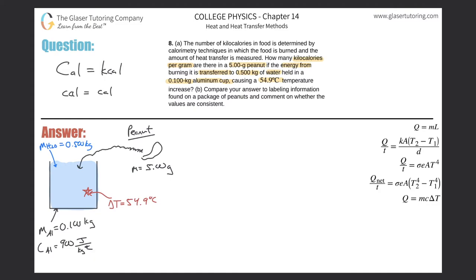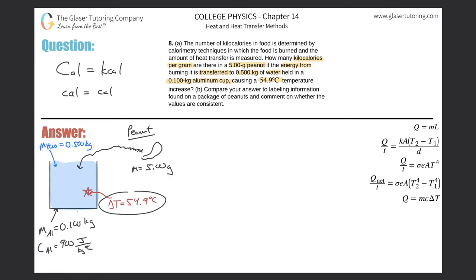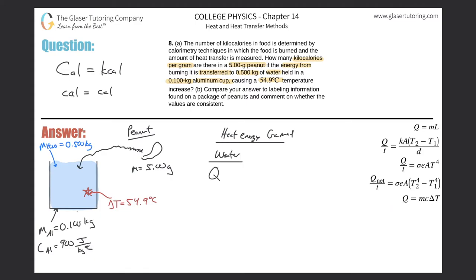I need to backtrack and figure out the total heat gained. I'll do a two-track analysis: first the heat gained by the water, then by the aluminum. For the water, I'll use Q = mcΔT, where Q is heat gained, m is mass, c is specific heat, and ΔT is the change in temperature. I'll use subscript W for water.